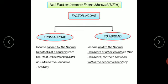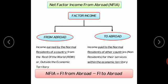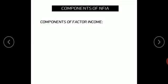This income goes to foreign countries, as non-residents take their earnings back to their respective countries. Factor income is thus divided into factor income from abroad and factor income to abroad. The formula for NFIA is: NFIA = Factor Income from Abroad minus Factor Income to Abroad. We will now look at the components of NFIA.